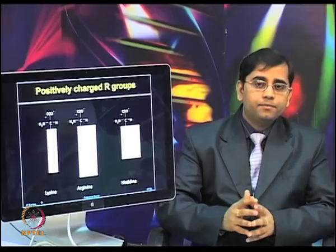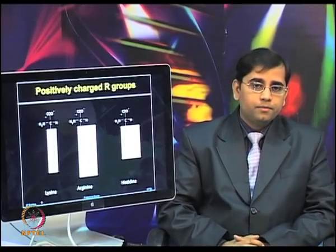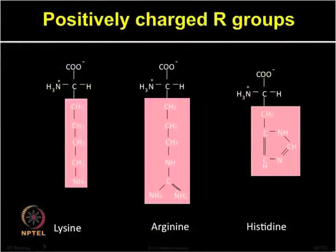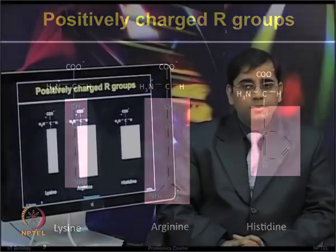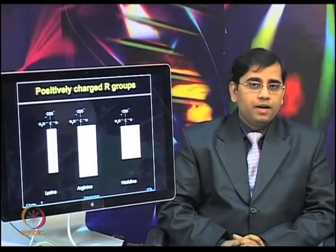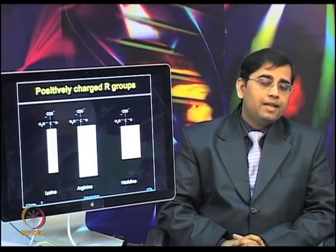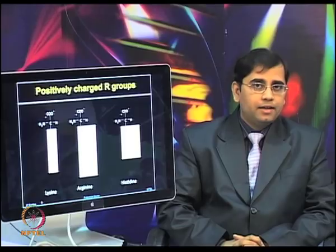The next category is positively charged R groups, with three amino acids: lysine, arginine, and histidine. Lysine is a base that contains a terminal primary amino group. Arginine contains a guanidine group. Histidine has a functional imidazole group — an aromatic ring that can be positively charged — and plays a very critical role in many enzymatic activities.